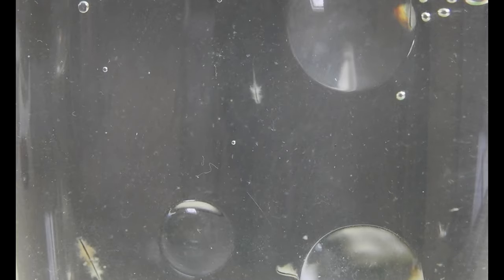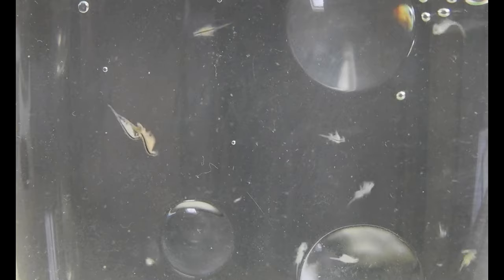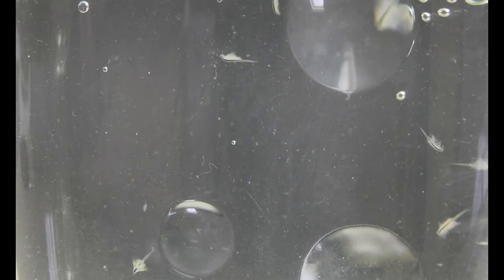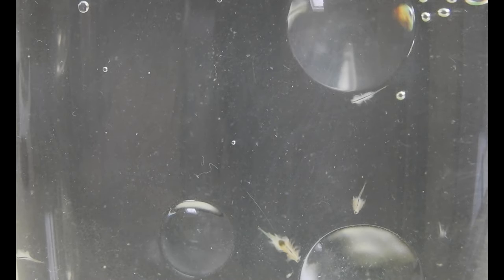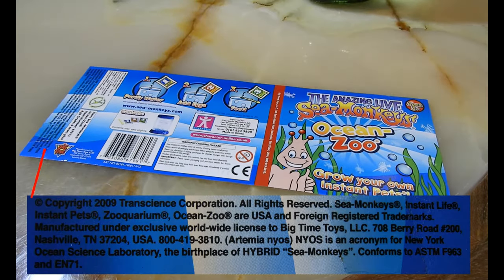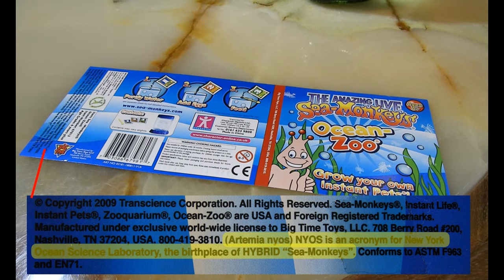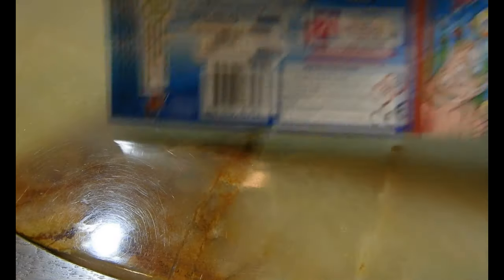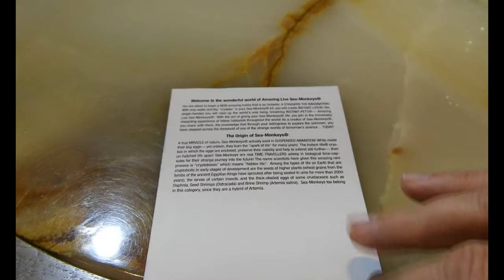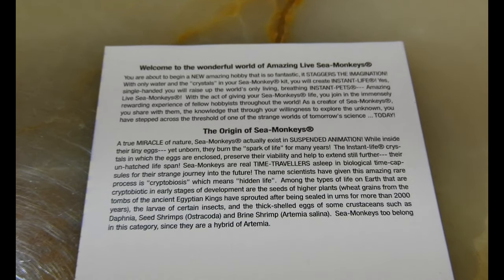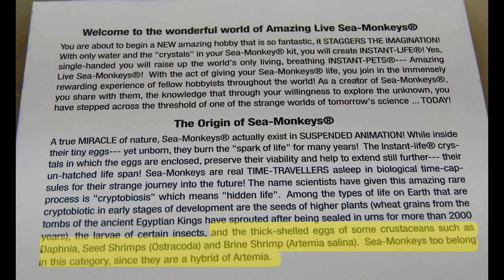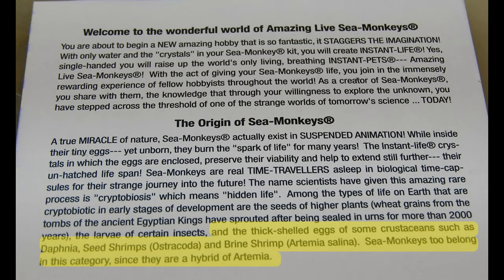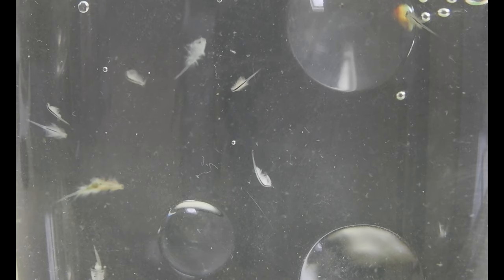I started my first official sea monkey culture at the beginning of May 2012. Previously I heard about sea monkeys being a special strain of Artemia. The materials included in the kit seemed to confirm this. Among the legal disclaimers: Artemia Nyos. Nyos is an acronym for New York Ocean Science Laboratory, the birthplace of hybrid sea monkeys. And furthermore, under the origin of sea monkeys, after explaining about cryptobiosis and thick-shelled eggs, sea monkeys too belong in this category since they are a hybrid of Artemia.